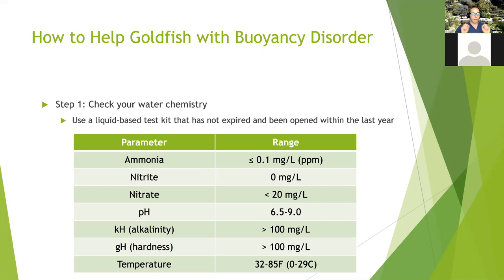So how do you help a fish with a buoyancy issue? The first step is to check your water chemistry — this will probably solve 50 to 75 percent of most buoyancy problems. Please use a liquid-based test kit that has been opened within the last year; the expiration date on the side only applies if it hasn't been opened.